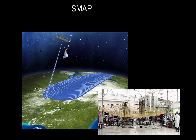Here's one example of a mission — the Soil Moisture Active Passive mission, which has the unique feature of having both an active and a passive microwave sensor on board. Unfortunately, the active sensor has since failed, so essentially it's only a passive microwave sensor at this point, with a very large antenna. It's nonetheless interesting as the first satellite to combine these two measurements.